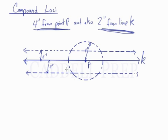So, now that we see where all the points are 2 inches from line K and 4 inches from P, we're just looking for the points that satisfy both conditions. So, that would be this point here. We'll just mark it with an X. This spot satisfies both here and also here.